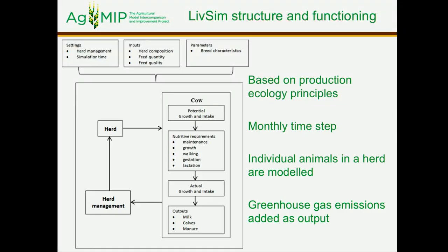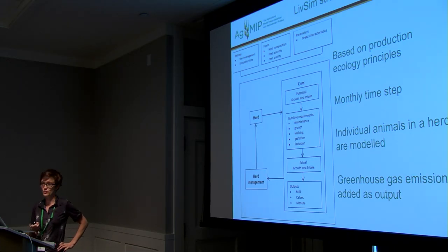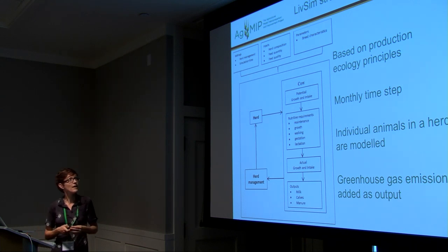The Livestream model used in these regional assessments is based on the principles of production ecology — it starts by calculating potential production based on the genetic potential of the breed, then reduces that potential by taking into account limiting factors such as feed availability and feed quality. Livestream uses a monthly time step, simulates individual animals in a herd, and simulates herd dynamics. Traditional outputs include milk, number of calves, body weight, and manure production, and greenhouse gas emissions are also being added as an output.